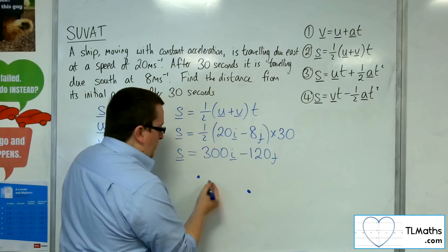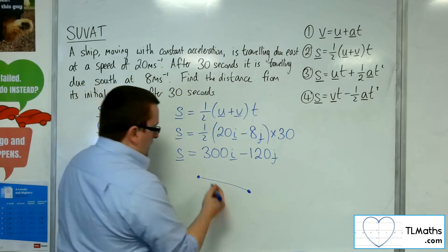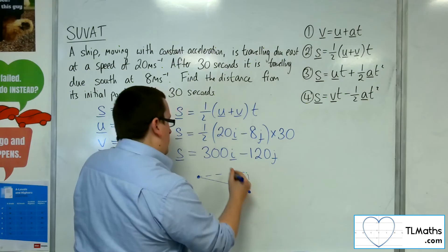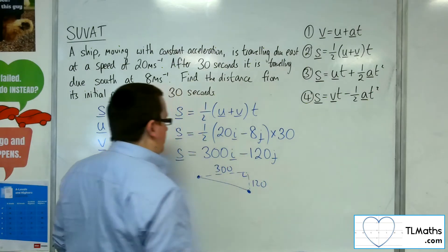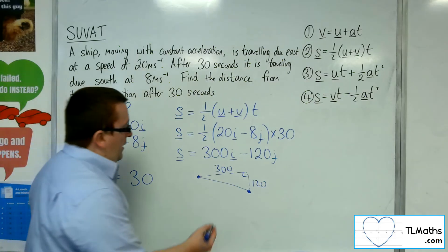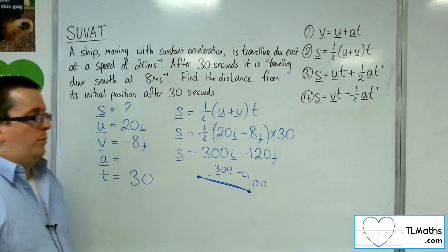This is its position after 30 seconds. We've gone 300 along and 120 down, so its actual distance is the length of that hypotenuse.